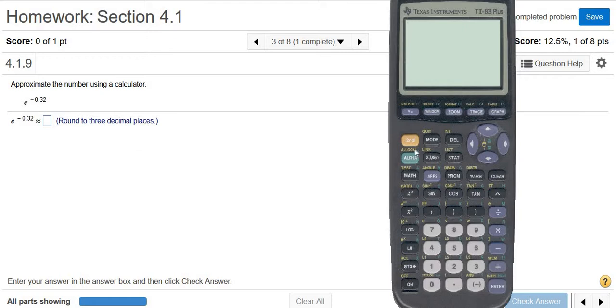So first we have to access the e key. The easiest way to access the e key is to hit 2nd, ln. The reason we had to hit 2nd is because here e to the x is orange. So you have to hit the orange button first. On some of the newer calculators, it's blue instead.